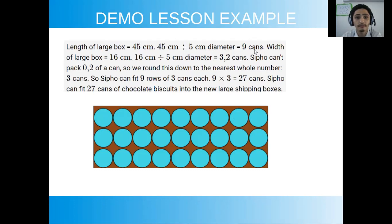In the width side of the large box it is 16 centimeters, so you take 5 centimeters of the diameter of one can and you check how many cans can fit along the side. So 16 divided by 5 and you see 3.2.